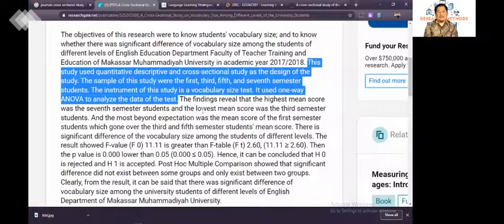The sample of the study were first, third, fifth, and seventh semester students. The instrument of this study is a vocabulary size test. It was analyzed using one way ANOVA. So the data was taken only once here. The test was analyzed using ANOVA because the researchers wanted to compare whether there were differences in the level of vocabulary size among the different levels of students, the first semester, third, fifth, and then seventh semester students.